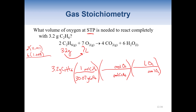For the mole ratio, we use the coefficients from the balanced equation — there's a 2 in front of C2H6 and a 7 in front of O2. Then one mole of any gas at STP is 22.4 liters. Multiply across the top and divide away the bottom: 3.2 times 7 times 22.4, divided by parentheses 30.07 times 2, gives us 8.34 liters.